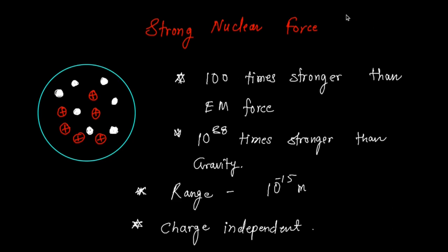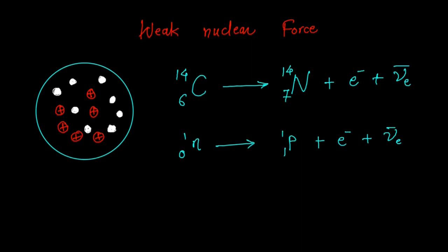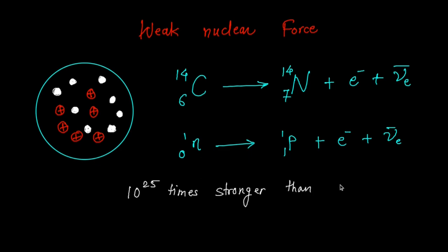The last on the list is the weak nuclear force. It is not the weakest force in the universe — gravity is in fact the weakest. The name 'weak' is given because it is weaker in comparison to the other nuclear force, the strong nuclear force. As far as strength is concerned, the weak nuclear force is 10 raised to 25 times stronger than gravity.